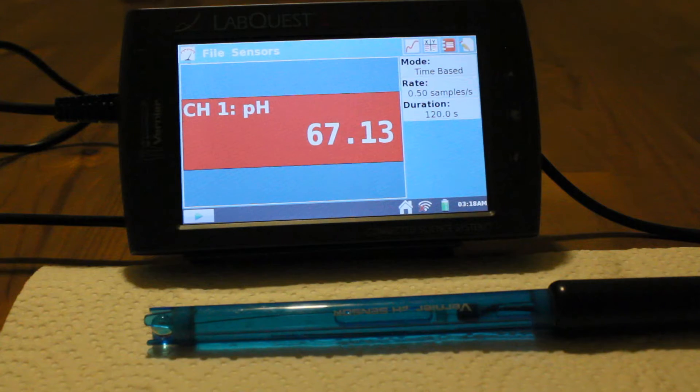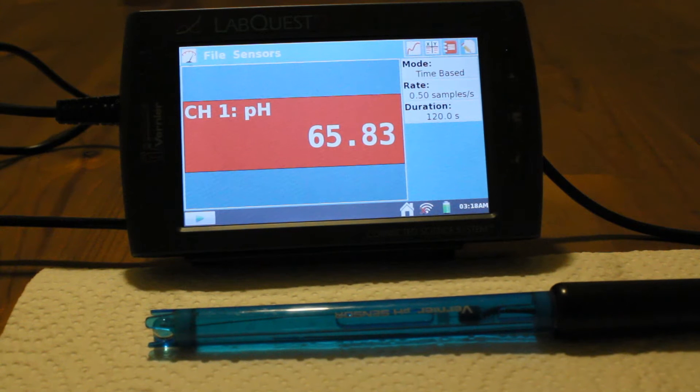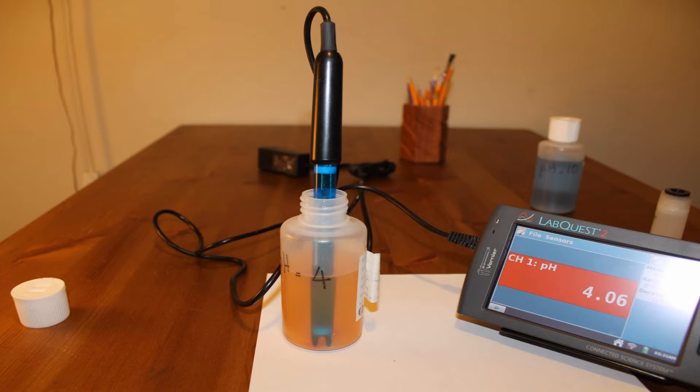Remove the pH meter from the storage solution by gently unscrewing the bottle, pull out the pH meter, and immerse it in the buffer solution of pH 4.